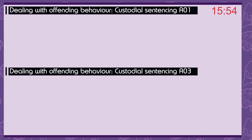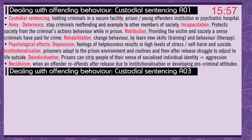Dealing with offending behaviour — custodial sentencing. Custodial sentencing is holding criminals in a secure facility: a prison, young offenders institution, or psychiatric hospital. Its aims are: deterrence — to stop criminals re-offending and be an example to society; incapacitation — to protect society from the criminal's actions while they're in prison; retribution — providing the victim and society a sense that criminals have paid for their crime; and rehabilitation — to change behaviour by learning new skills, training, and behaviour therapy. Psychological effects include depression, feelings of helplessness, high levels of stress, self-harm, and suicide. Institutionalisation: prisoners adapt to the prison environment and routines and after release struggle to adjust to life outside. De-individuation: prisons can strip people of their socialised individual identity and result in aggression. Recidivism — when an offender re-offends after release — can be due to institutionalisation or developing pro-criminal attitudes.